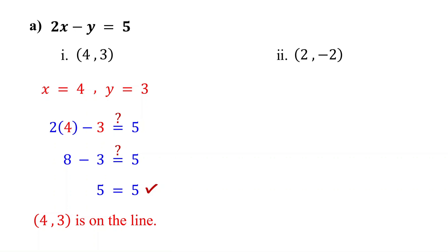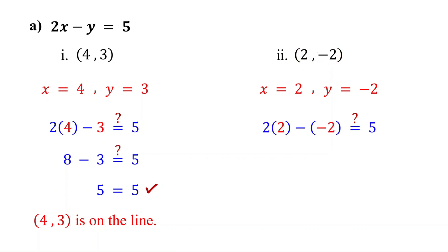What about the point 2 comma negative 2? Is it on the line? Let's check it. Remember, the first number is the x value and the second number is the y value. So substitute 2 for x and negative 2 for y. Then simplify. 2 times 2 is 4.